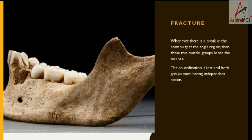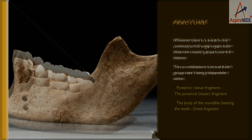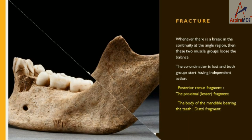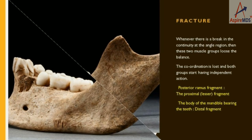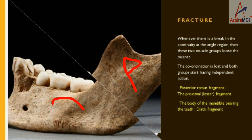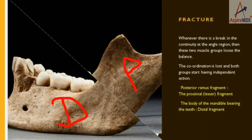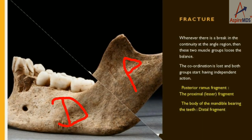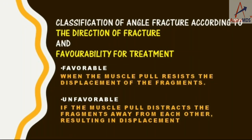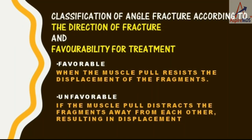Usually both these groups work in perfect harmony, but whenever there is a fracture, this coordination is lost. In this case, the fragment of the mandible towards the ramus is called the proximal fragment, and the body containing the teeth is known as the distal fragment. We will now see the classification based on the direction of fracture and favorability of treatment.